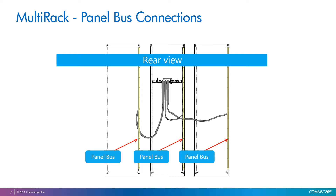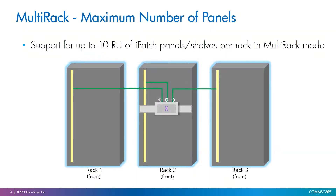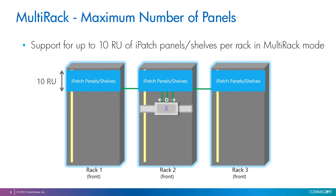When an InVision Controller X is working in multi-rack mode, it can manage up to 10 rack units of eyepatch panels or shelves on each rack. The eyepatch panels don't need to be all mounted in consecutive rack units. They can be placed anywhere in the racks as long as the limit of 10 rack units for each rack is not exceeded.